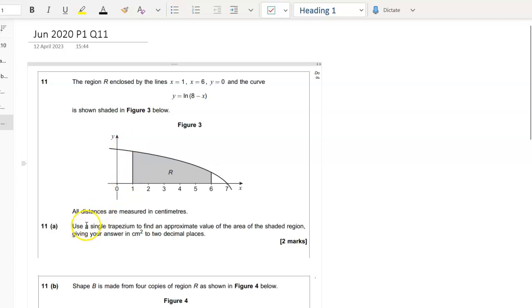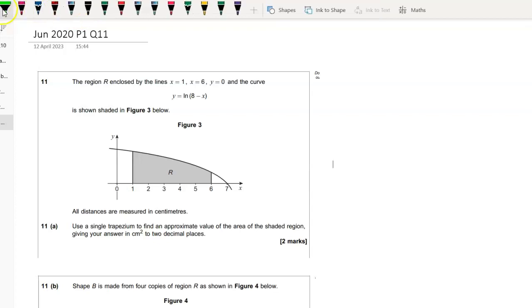But if you read the question, it's saying use a single trapezium to find an approximate value of the area of the shaded region. So really what that's saying is you want to use this trapezium here.